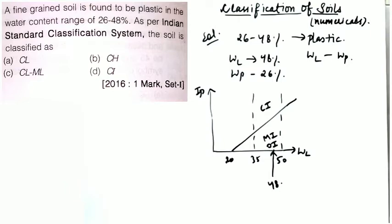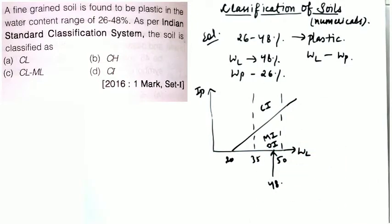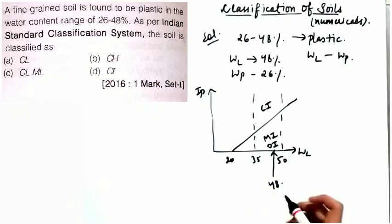Here is a hint for such questions: if the soil lies below the A-line and you are confused between MI and OI, and nothing is stated in the question, classify it as MI. However, if the question states that after oven drying the soil loses significant weight, then it is organic soil — because organic soil loses weight at high temperatures as it converts to ash. If no such condition is given, it is silt.